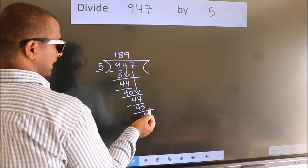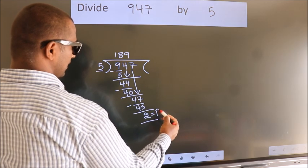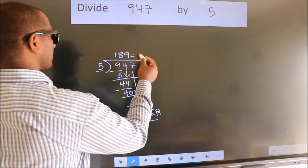No more numbers to bring it down. So we stop here. This is our remainder. This is our quotient.